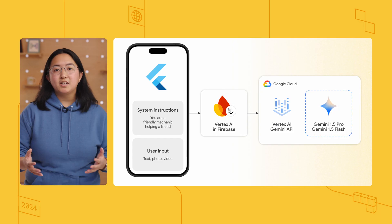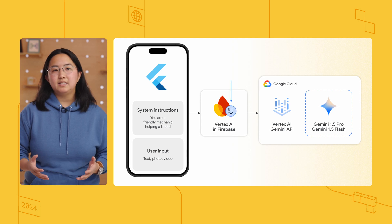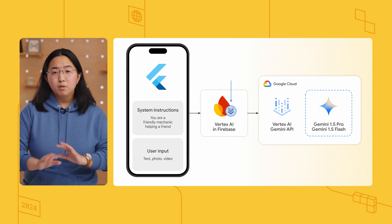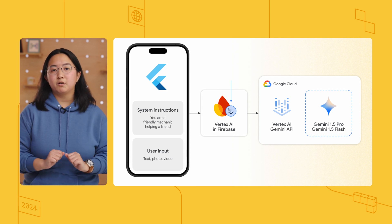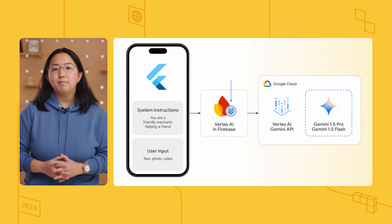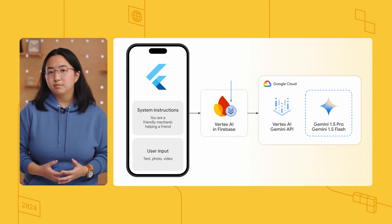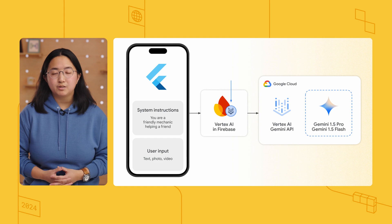Now, the big question is: how do you get a prompt from the Gemini app or AI Studio into your Flutter app? That's where Vertex AI in Firebase comes in. Vertex AI in Firebase is a client SDK that lets you call the Gemini API directly from within your Flutter app — purely serverless, no service layer required. The Gemini API itself exposes the functionalities of the various Gemini models, like Gemini 1.5 Flash. Let me show you how to configure it.